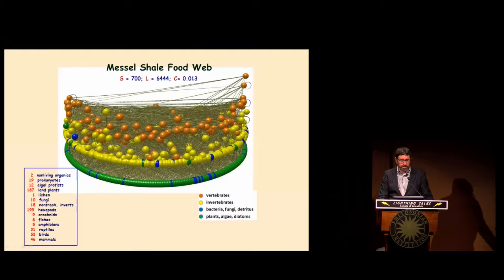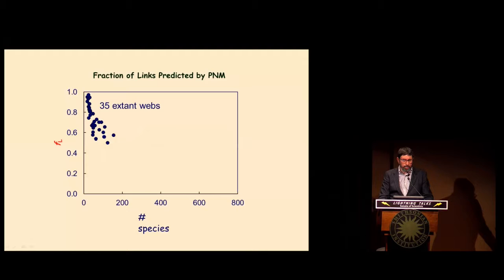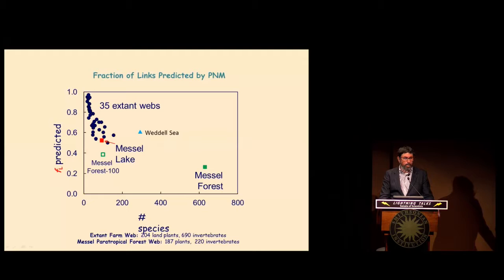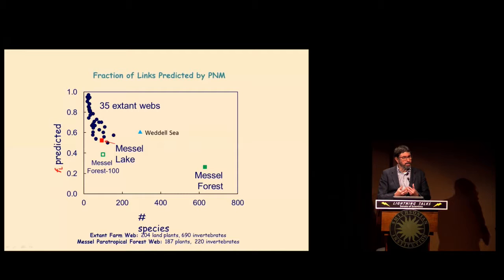Here's the food web: 700 species, 6,444 links, and a connectance of 0.13. It's very diverse and very highly resolved. If we plot it with modern food webs using two variables — the number of species and the fractions of links that are predicted — it occurs way out as an outlier. If we degrade it to 100 species, it falls in line. We also have the Red Sea Web, which is kind of strange because there aren't that many primary producers. What this says is that modern webs are highly unresolved, and sometimes we have to go to the fossil record to get a really good web that can be compared to modern webs. In the case of the Messel, we have one of the best webs ever known.